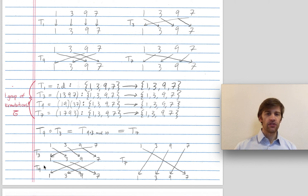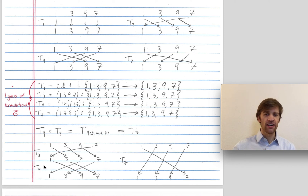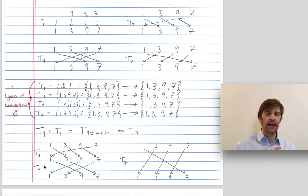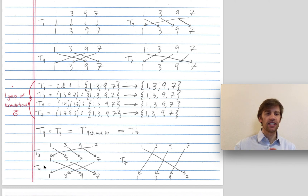I could multiply 3 and 9 to get 27, or 7, and then map that to T7. Or I could map 3 and 9 to T3 and T9, and compose them. When I compose T3 and T9, I better get T7 if I'm preserving the group structure. Is T3 composed with T9 equal to T7? Yes! Take T3 and copy it here, take T9 and copy it here. When I do one after the other, I do get T7.